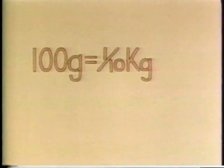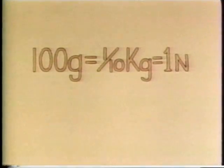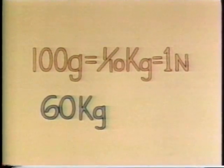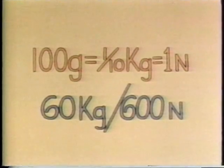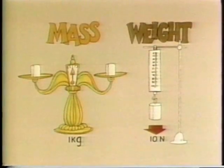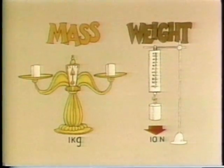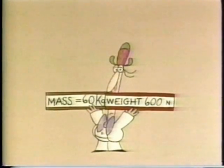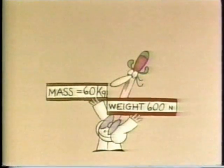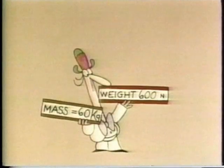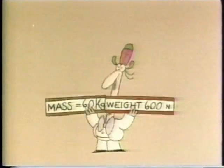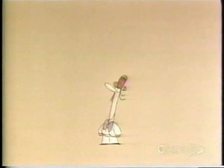You can usually work out the number of newtons by multiplying the kilograms by 10. 100 grams, or one tenth of a kilogram, is about the same as 1 newton, and 60 kilograms are about the same as 600 newtons. But if one kilogram is the equivalent of 10 newtons, why bother to make a distinction between a mass of 60 kilograms and a weight of 600 newtons? To find the answer to that, let's go to the moon.